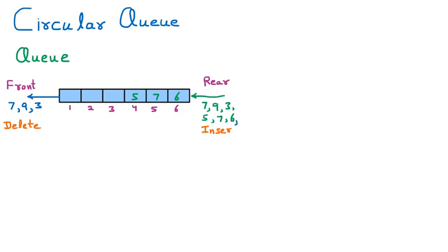Now if we want to insert one more element, say 2, we cannot insert it into the queue. The reason is that insertion always happens from the rear side, and there is no space remaining on that side because positions 4, 5, and 6 are already filled. But is there actually no space available? Space is available in blocks 1, 2, and 3, but because of the restriction that we can only insert from the rear side, we cannot insert the next element.